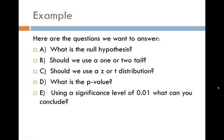Some questions that we will want to answer about this problem are: what exactly is our null hypothesis? Should we use a one or two tail test? Should we use a z or a t distribution? What is our p-value? And finally, using a significance level of 0.01, what can we really conclude?